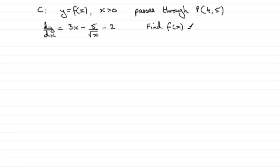So how do we do this one then? Well to get f of x or y, we need to integrate 3x minus 5 over root x minus 2 with respect to x. We've got to work backwards. So that's where we first start then.